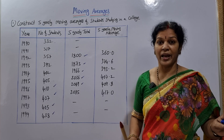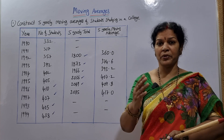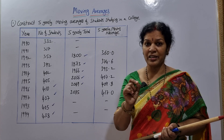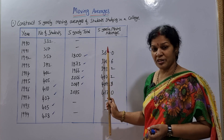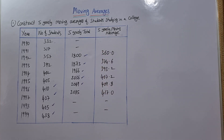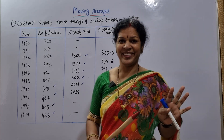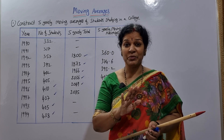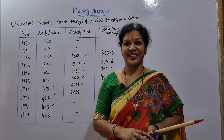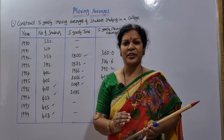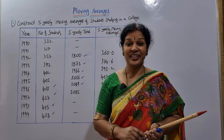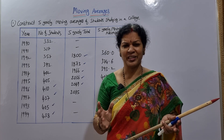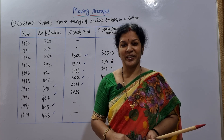I have already uploaded a full time series playlist including freehand curve, semi-average, and more — please check it out. Whenever you get moving average, semi-average, freehand curve, or least square in your exam, you should score 100 percent. Practice well in advance, revise before exams, stay connected, and check out the playlist. Don't forget to share these videos — everything is free. Study well and have a bright career. Good luck!